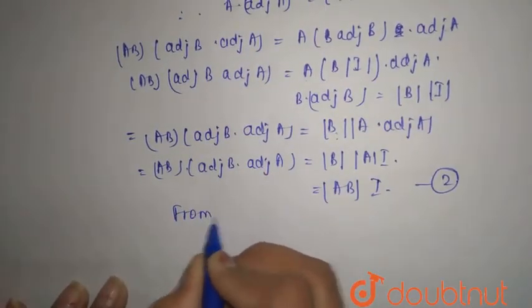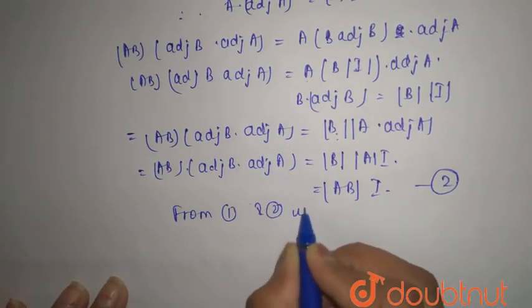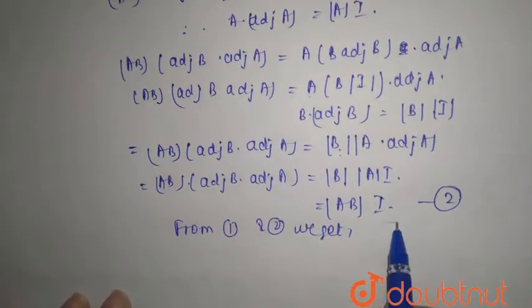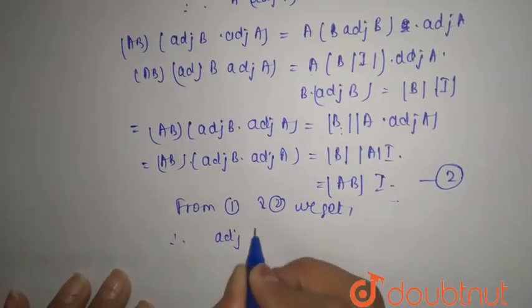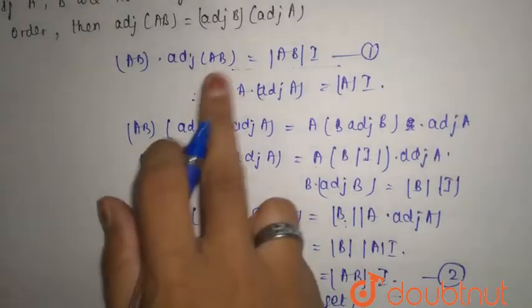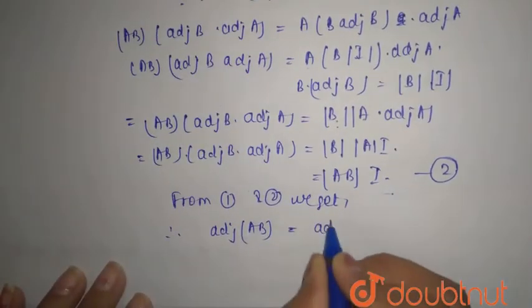So from first and second equation, we will get... This is the first equation, this is your second equation. Therefore adjoint of AB, that is, adjoint of